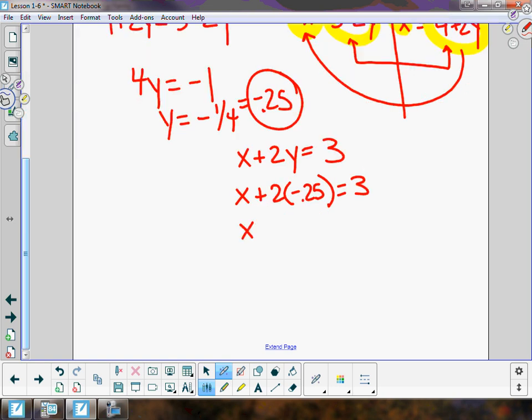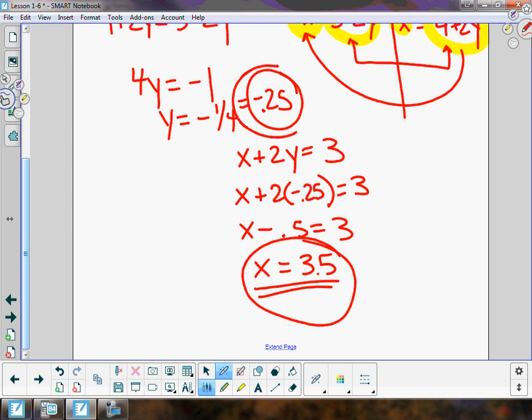Two times -0.25 is -0.5. To get x by itself, I would add 0.5 to both sides, giving me the x coordinate 3.5. As you can see, we got the same solution: 3.5, -0.25.